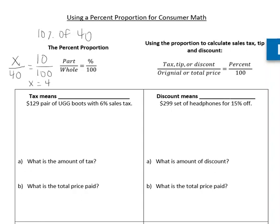Now we can apply it to consumer math problems when we're trying to calculate sales tax, tip, or discount. So when you do that, it's going to be tax, tip, or discount as your part on top of the original price or total price. We set that equal to the percent over 100. When we're doing percent proportions, we always need to have a 100 in our percent proportion.